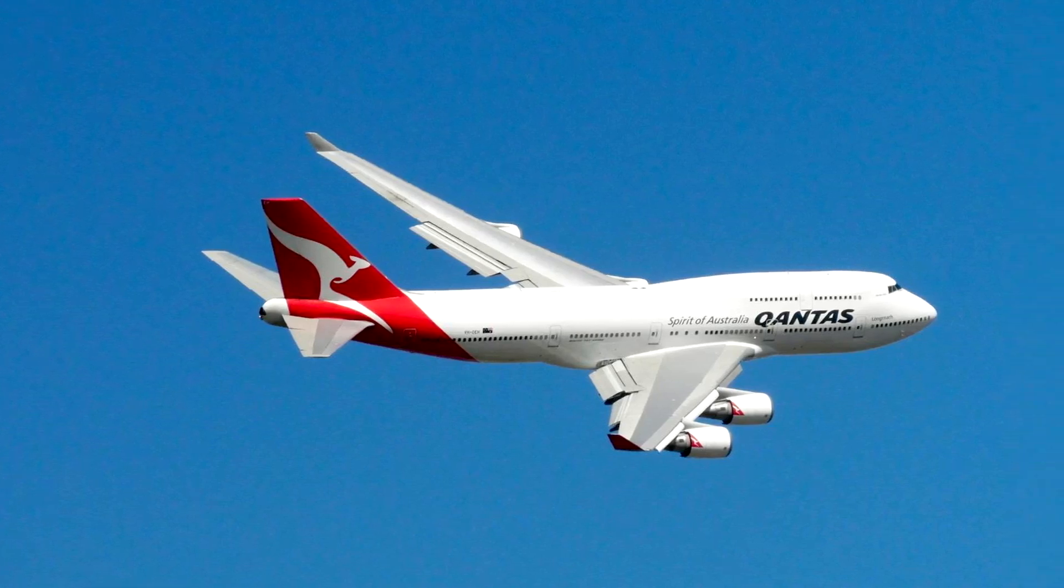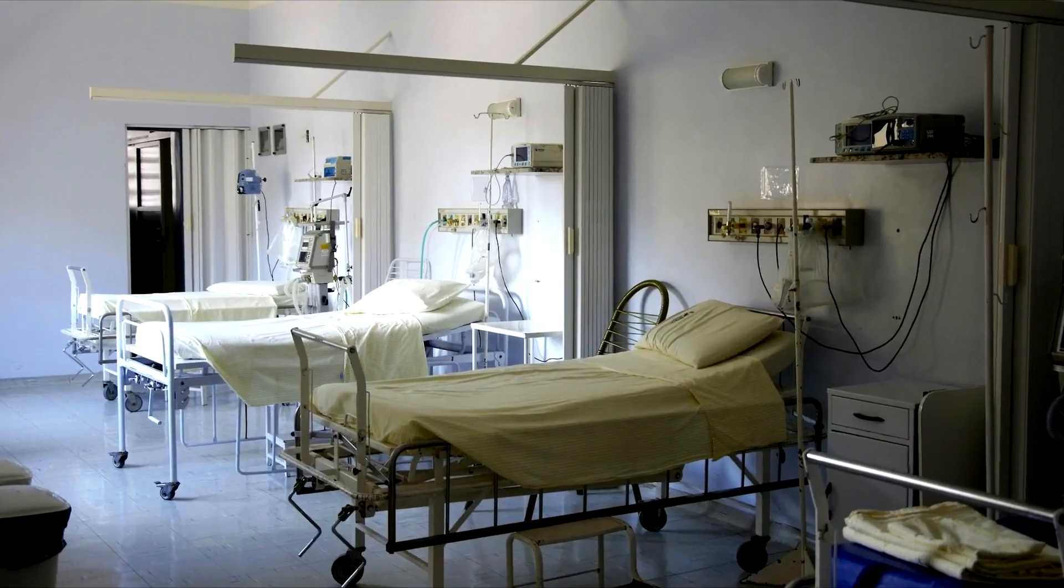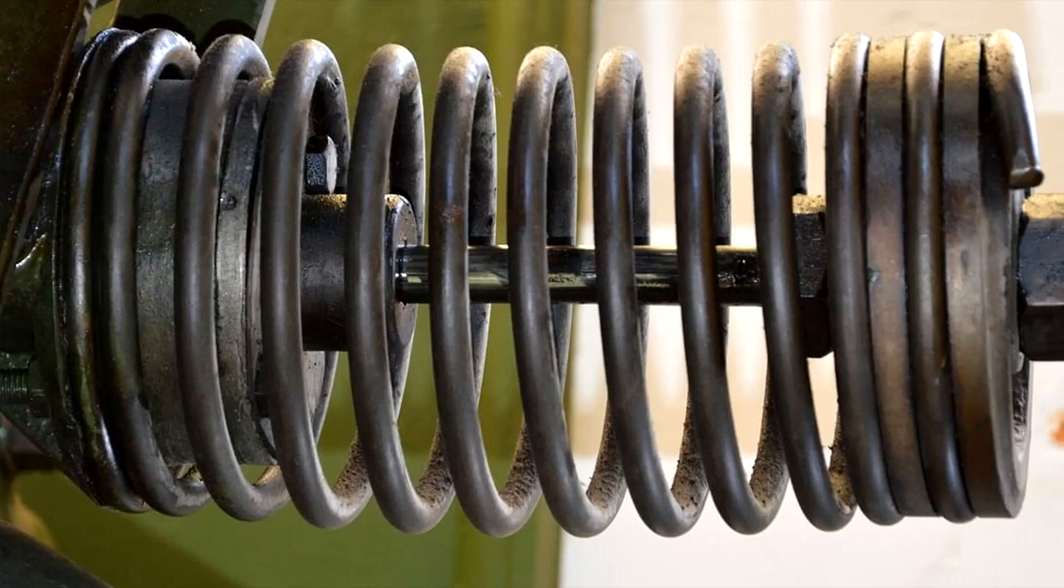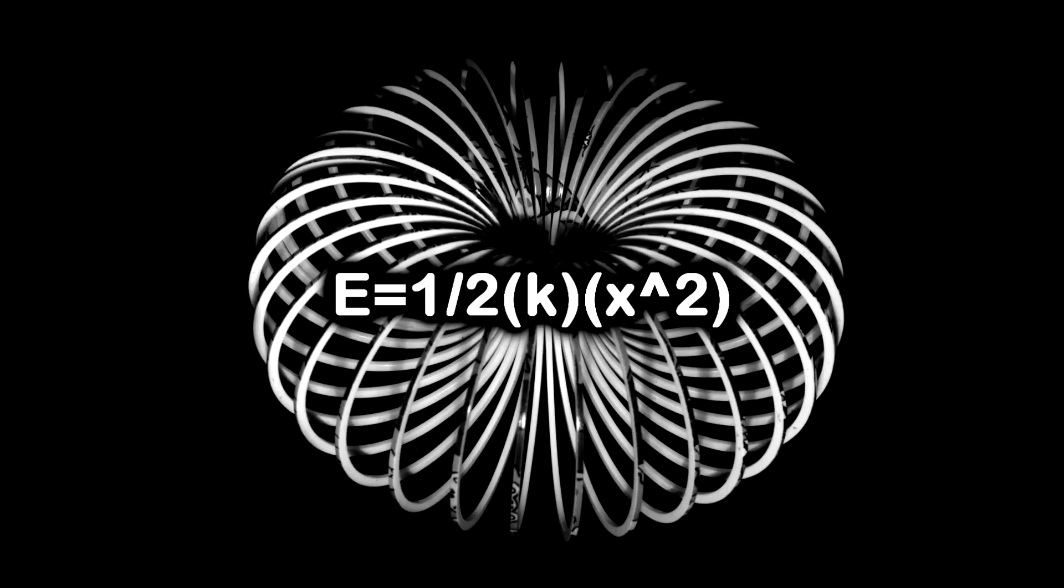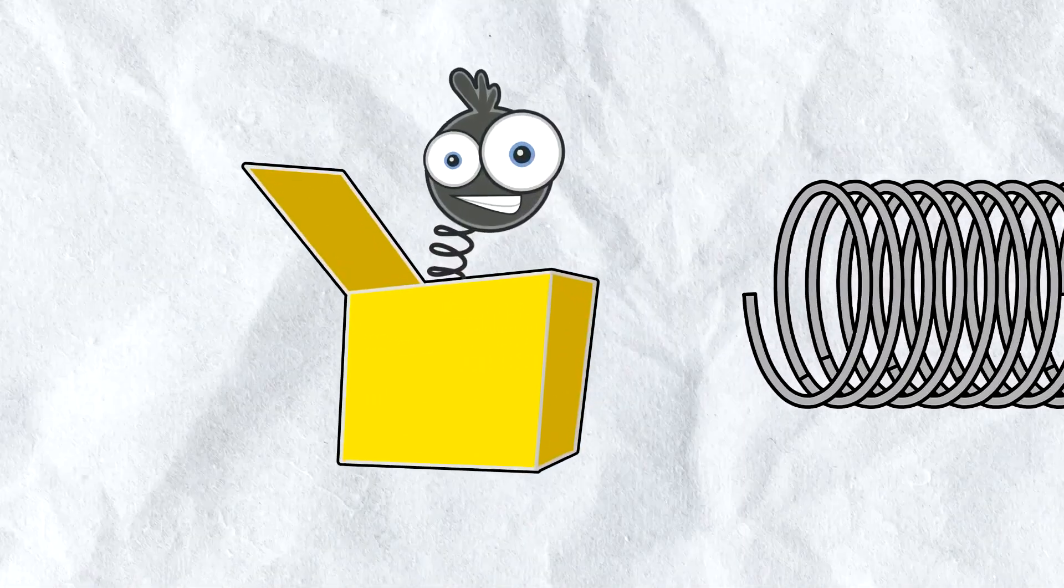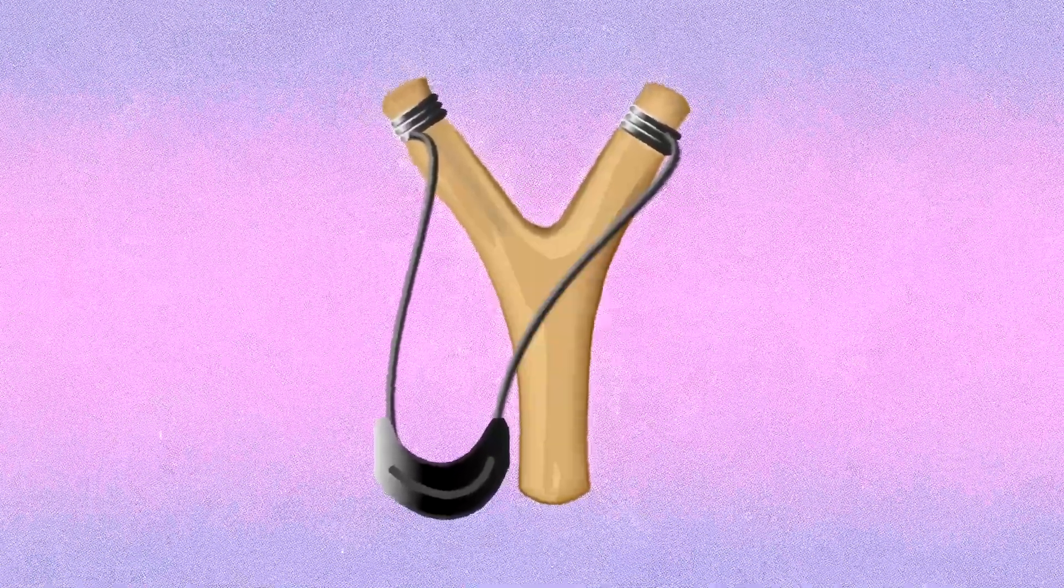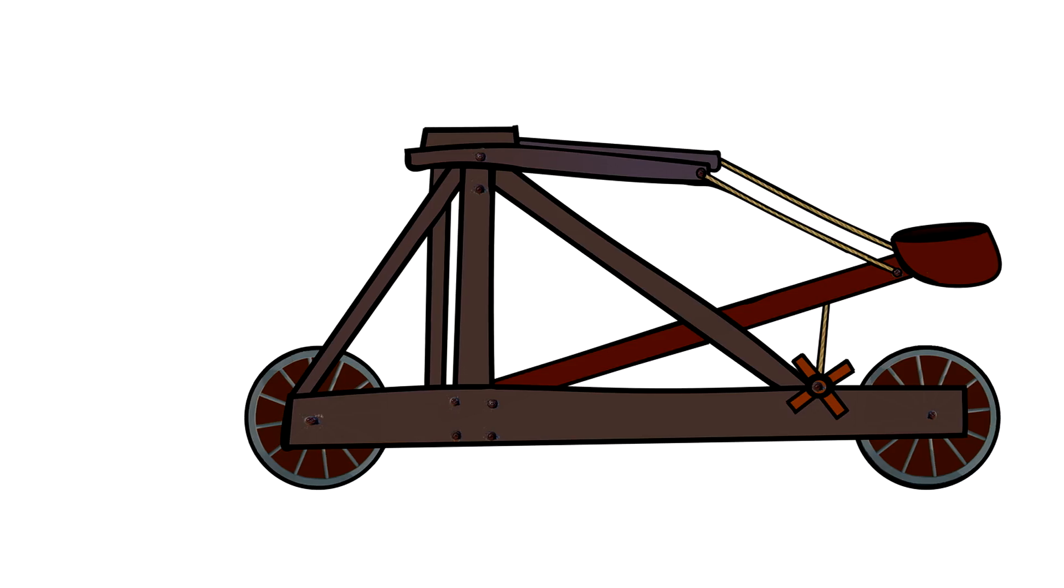Springs are used in airplanes, cars, medical devices, guns, you name it. The way they operate is that they store energy when compressed. The same energy can be freed when the spring is released from its tension, similar to a slingshot, a bow, or even a trebuchet.